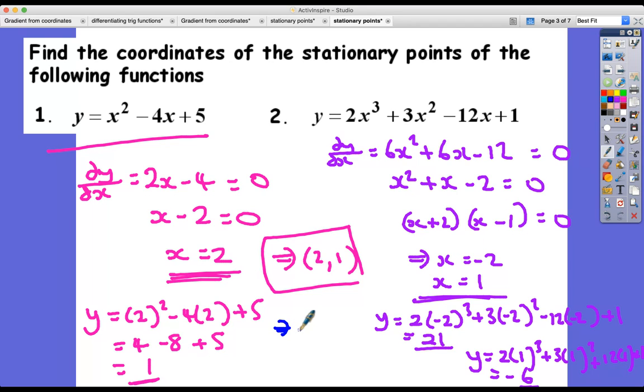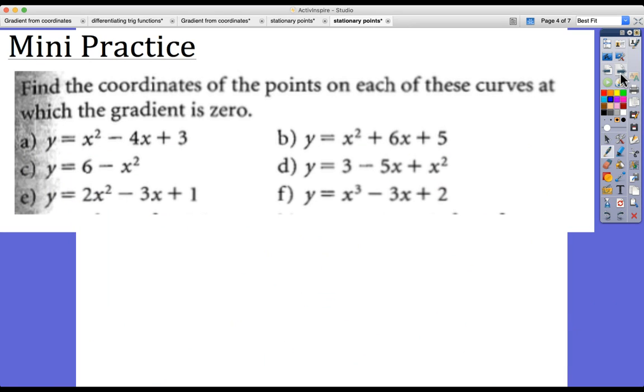So the two answers there, I'm going to squeeze them in here, are (-2, 21) and (1, -6). There we go. So our skills of factorizing quite important in this.